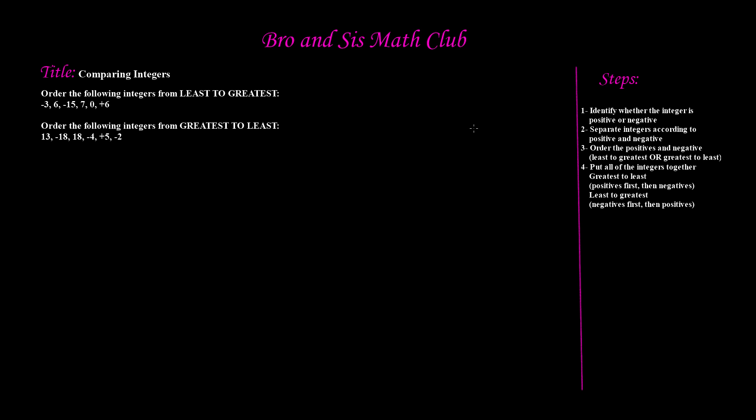We have two different examples here. First we'll learn how to order integers from least to greatest, then we'll flip it to greatest to least. We have four simple steps. Step number one says: identify whether the integer is positive or negative. So we're going to identify whether the number is positive or negative using the sign in front of the integer. So we have negative 3 — I know this is negative because it has a minus sign in front of it. If it had a plus sign, it would be positive.